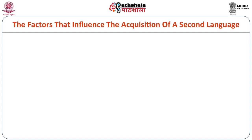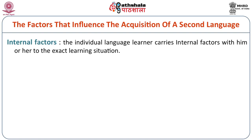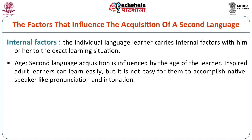The factors that influence the acquisition of a second language are both internal and external. When we talk about internal factors, we first discuss age. Second language acquisition is influenced by the age of the learner. Inspired adult learners can learn easily because they take help from the native language, but it is not easy for them to accomplish native speaker-like pronunciation and intonation — that comes at the early stage, early age.